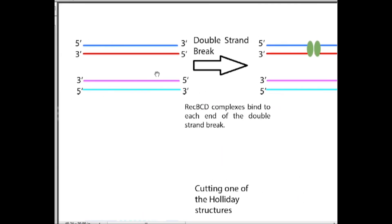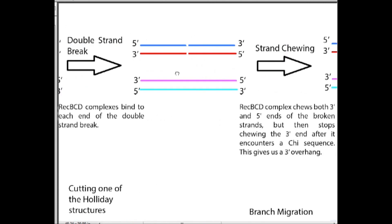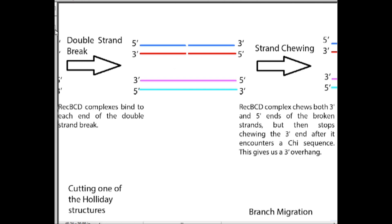We have two homologous chromosomes, one of which is going to get a double strand break on it. The first step is that a complex of REC-B, REC-C, and REC-D bind to each end of this broken chromosome. So we have a complex of REC-BCD here and a complex of REC-BCD here. Now these complexes are actually going to chew up the broken ends of the chromosome up until a certain point.